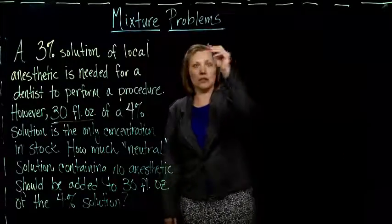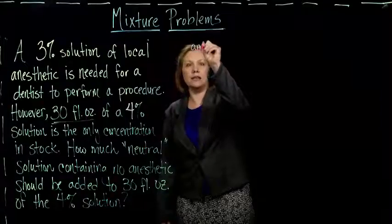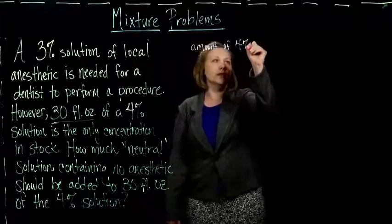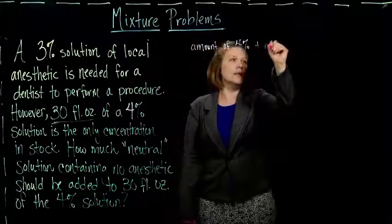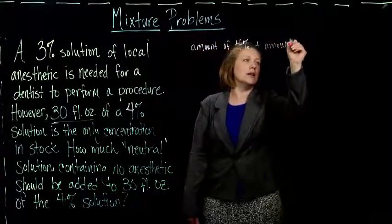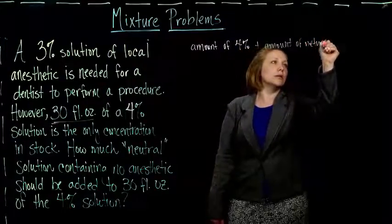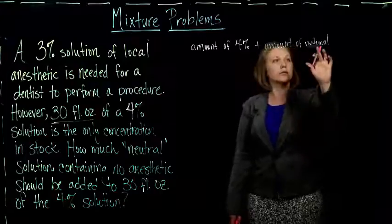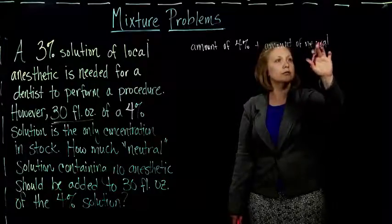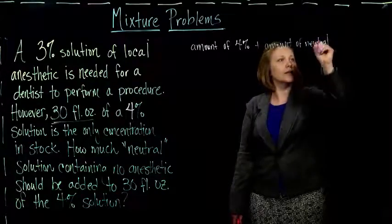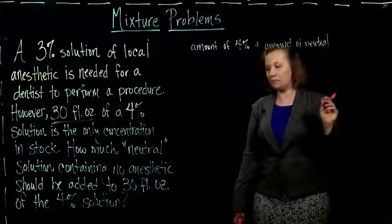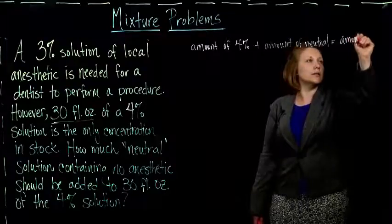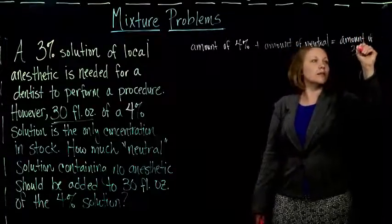So we can set it up pretty much the same way. We take the amount of the 4% solution plus the amount of the neutral solution, and that should give us the amount of the 3% solution.